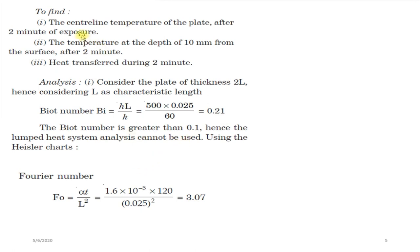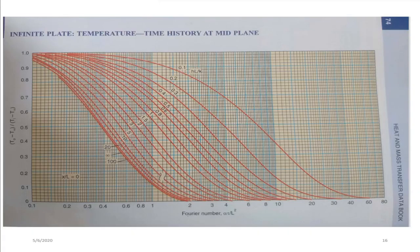For the temperature-time history graph at the mid-plane, we need the Biot number (hL/K) and the Fourier number. With these two parameters we can find the y-axis value. The Fourier number works out to 3.07.